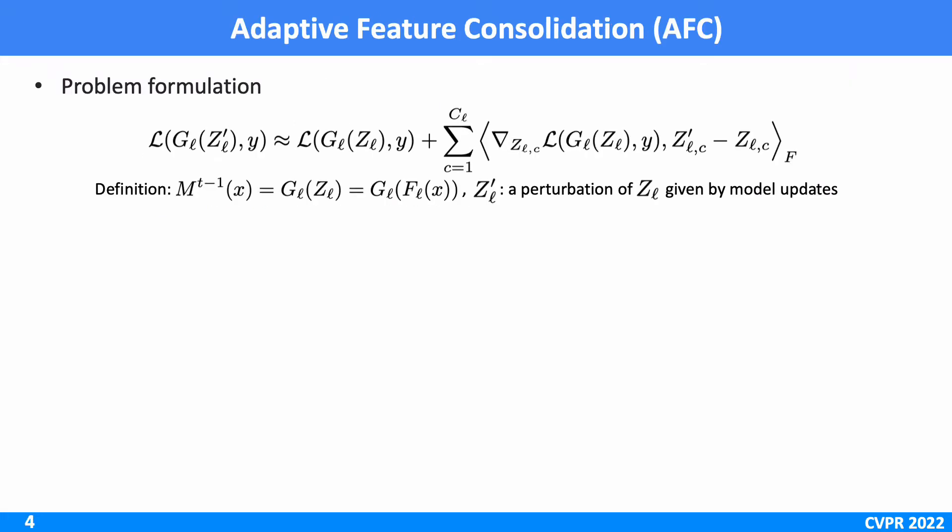To solve the limitation, we propose a simple but effective approach which basically maintains important features for robustness while making less critical features flexible for adaptivity. First of all, we compute the loss given by Z'L.